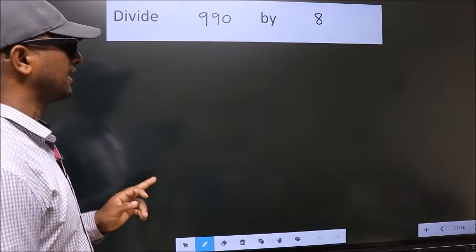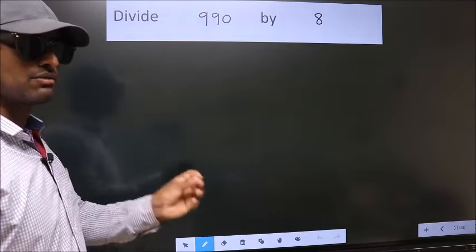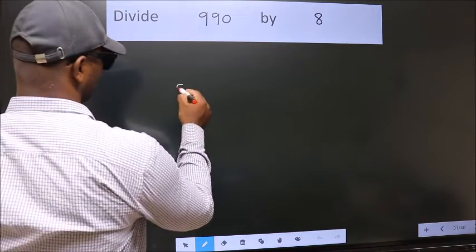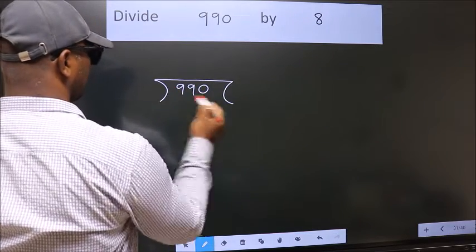Divide 990 by 8. To do this division, we should frame it in this way. 990 here, 8 here.